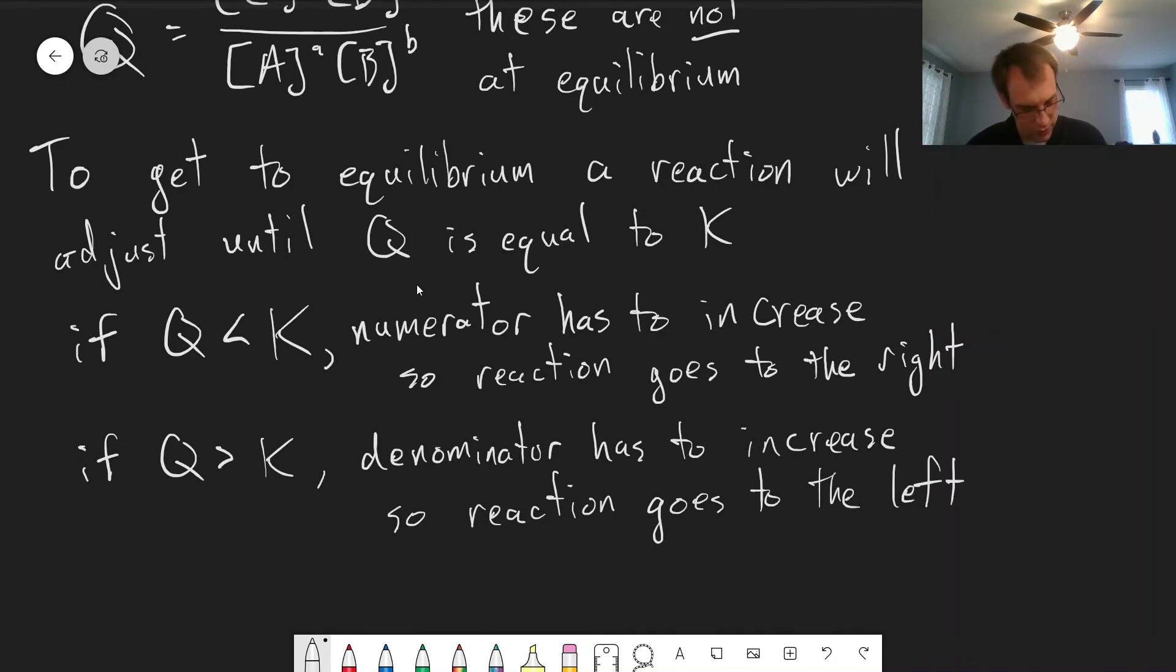And this is the case, even if our value of K is very large or very small, which is often the case in chemistry, this relationship between Q and K will always hold. And so reactions proceed to try and get their concentrations to match the value of the equilibrium constant.